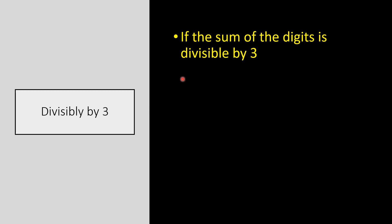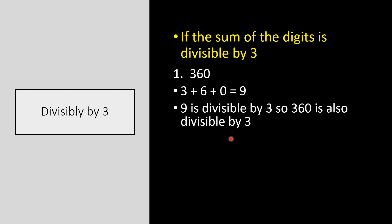Divisibility rule for 3 — and it is very easy. If the sum of the digits is divisible by 3, then that number is also divisible by 3. For example, 360: the sum of the digits is 3 + 6 + 0 = 9. Since 9 is divisible by 3, 360 is also divisible by 3.